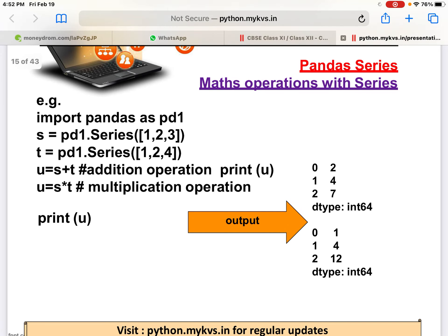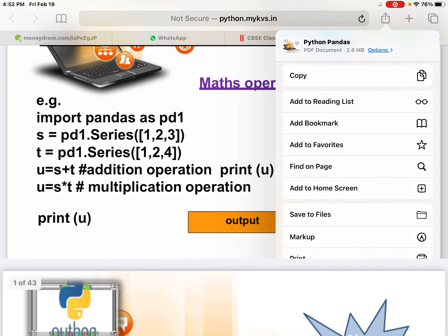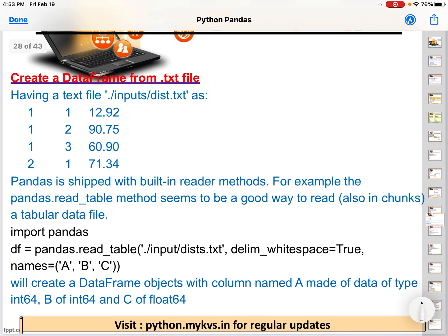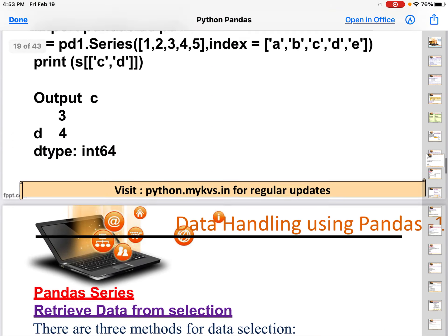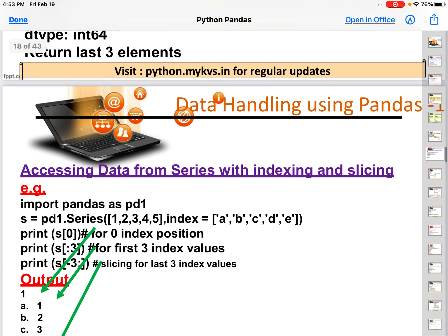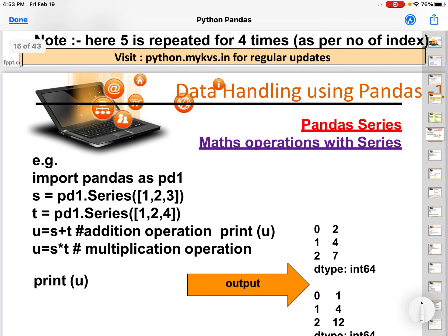Once again I am explaining, just have a look how the data are getting added here. So 1 plus 1 will become 2, 2 plus 2 will become 4, 3 plus 4 will become 7. Now next one, we are doing multiplication: that is 1×1 is 1, 2×2 is 4, 3×4 is 12. That is why we are getting this output.